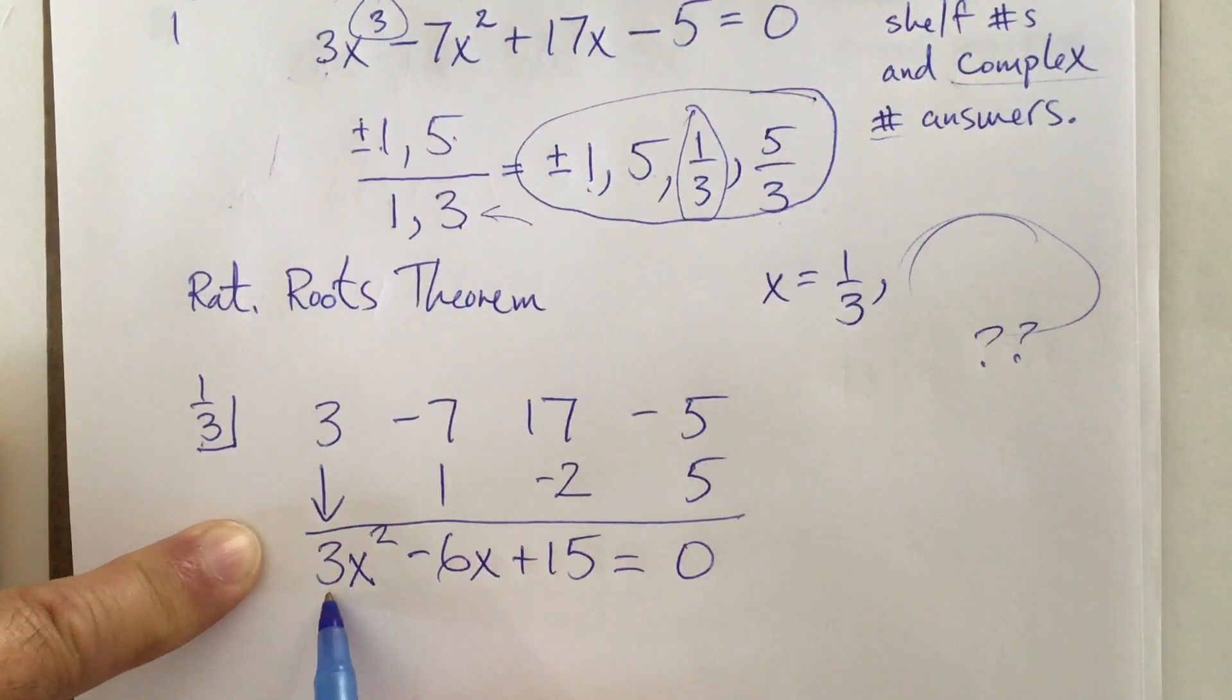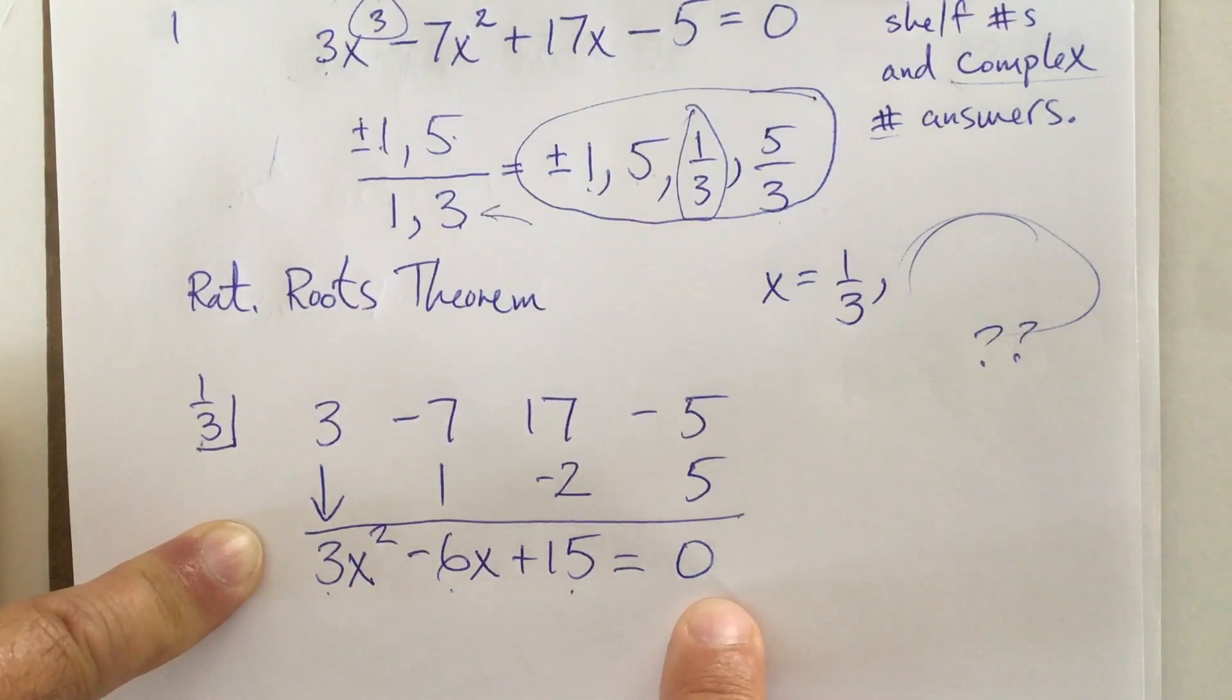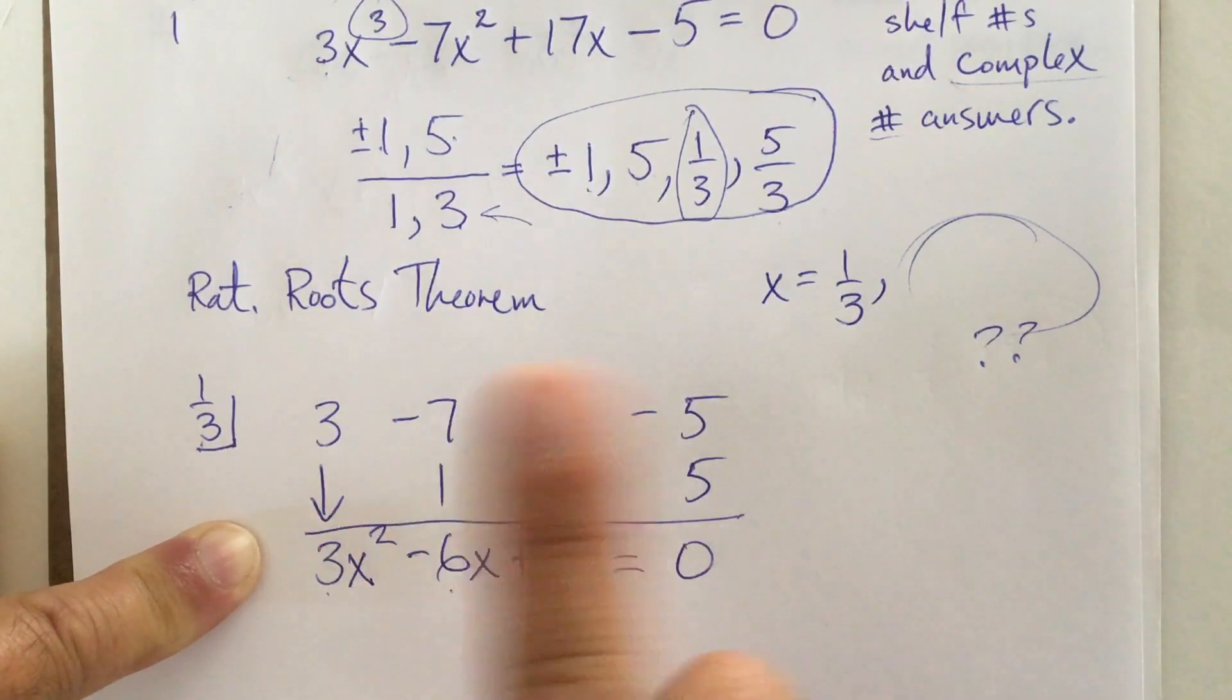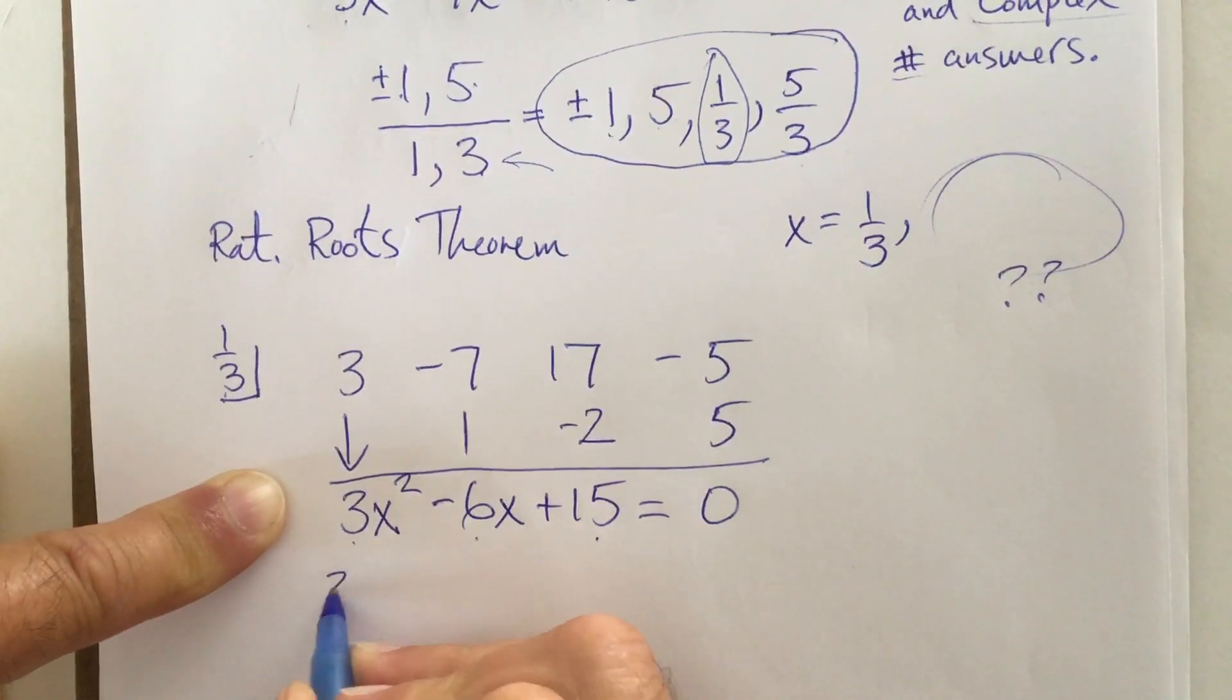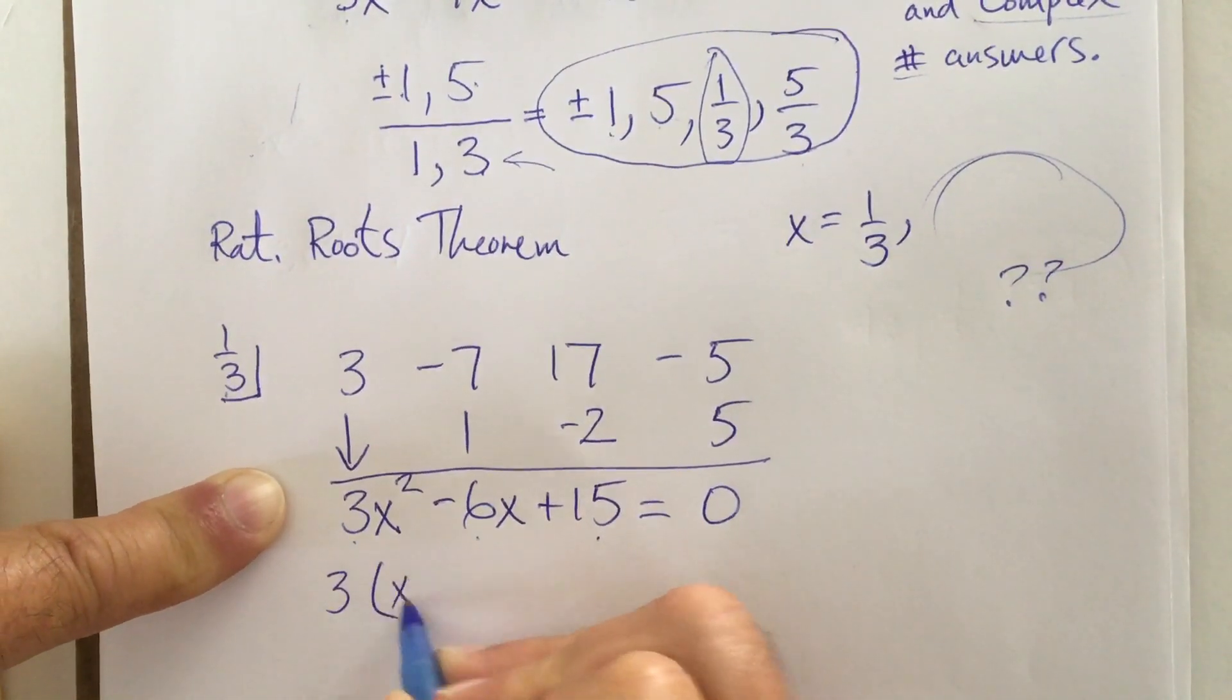So I have 3x squared minus 6x plus 15 equals zero. Now, do you guys notice this? There is a GCF involved here. When you have a GCF in an equation, you can take it out. It will not change your solutions for x. It won't. No, no, no. I am wagging my finger. I am going to take out the 3.